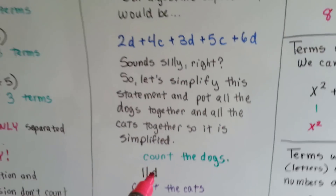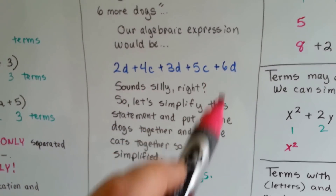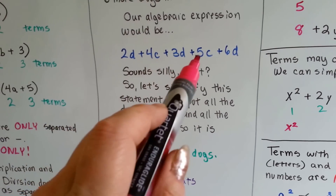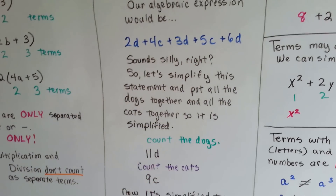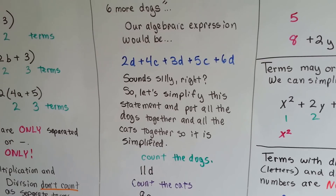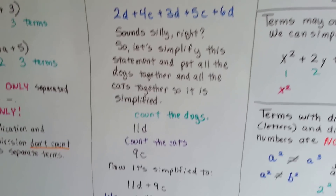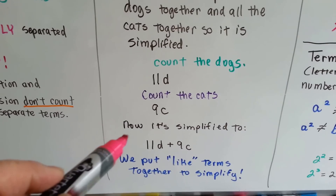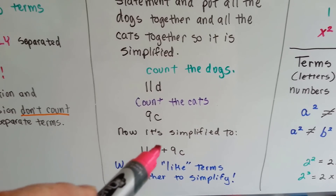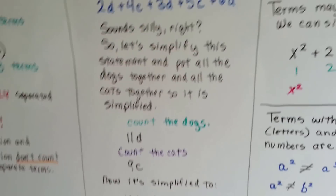So we're going to count all the dogs, all the d's: 2, 3, and 6 — that's 11. Count all the cats: 4 and 5 is 9. So if I had said to you, Emma has 11 dogs and 9 cats, instead of saying, why are you talking crazy, you would have said, wow, that's a lot of animals. Now it's simplified to 9 cats and 11 dogs, and we can say 11d plus 9c. We put the like terms together to simplify it.